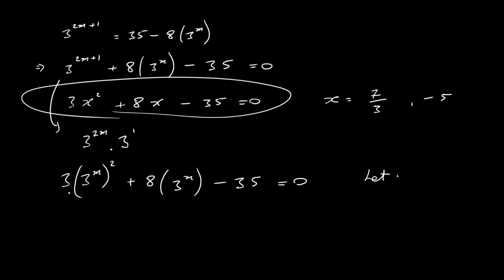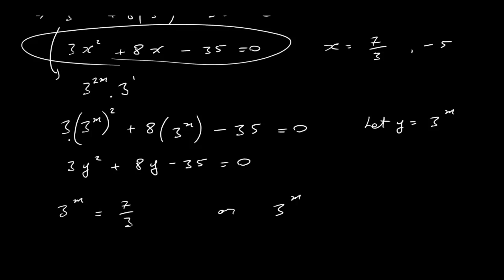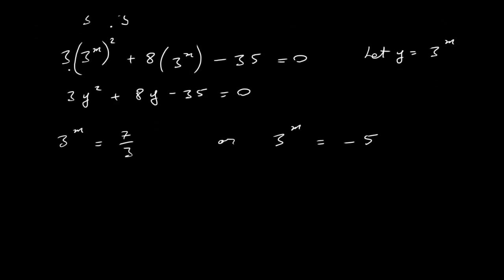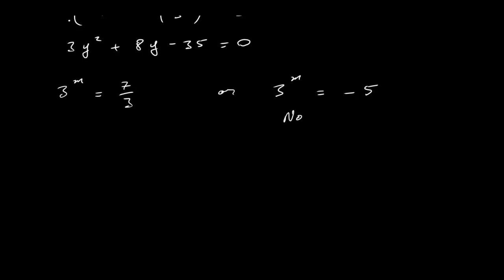Let y = 3^m. Then the equation becomes 3y² + 8y − 35 = 0, which we already solved: y = 7/3 or y = −5. So 3^m = 7/3 or 3^m = −5. You can't raise 3 to any power to get a negative number, so 3^m = −5 has no solution. We only need to solve 3^m = 7/3.